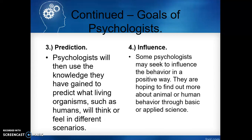The next two goals are prediction and influence. For prediction, psychologists use the knowledge they've gained to predict what living organisms such as humans will think or feel in different scenarios — for example, if we put a person who's afraid of the ocean near it, or show them a picture or movie with the ocean, how are they going to react? Maybe they're fine seeing a movie about the ocean but not okay being in the ocean — understanding what a person's thinking might be.